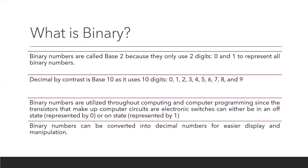Binary numbers are called base 2 because they only use two digits — 0 and 1 — to represent all numbers. By contrast, decimal numbers are base 10, using digits 0 to 9. Binary is used in computing because transistors — the components of computers — are essentially switches which can be either on or off: the off position represented by 0 and the on position by 1. That's why binary is essentially the base language of computing. Since humans are accustomed to decimal numbers, binary numbers are usually converted into decimal for easier display and manipulation.